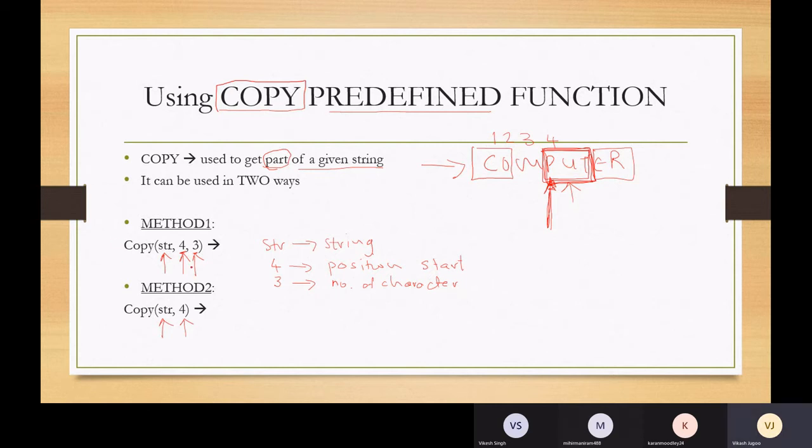This is a predefined function. You must understand how the parameters work in order to use it. The first parameter is your string. Second parameter refers to the starting point that you want to copy. And the third parameter is the number of characters from that point.